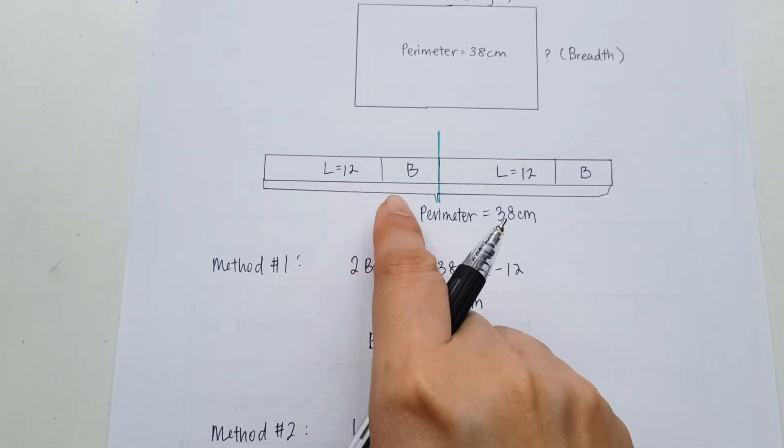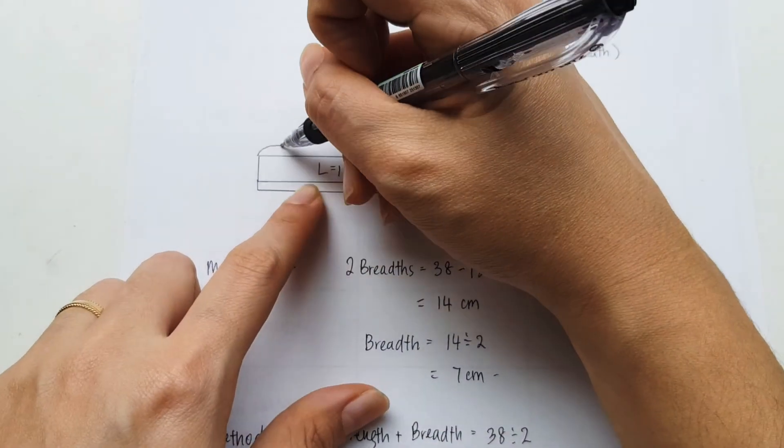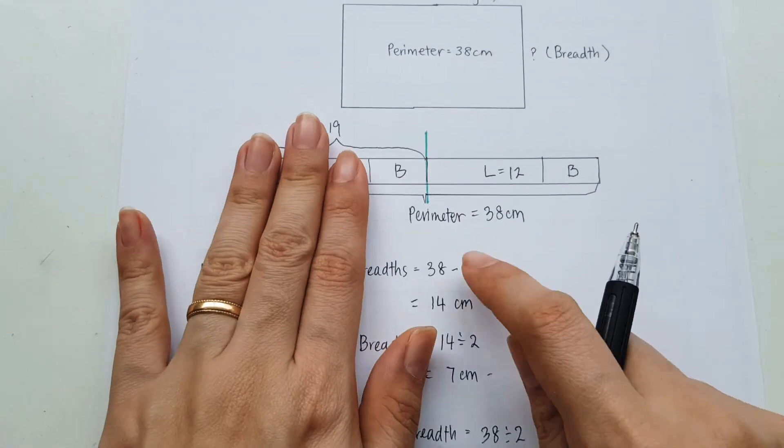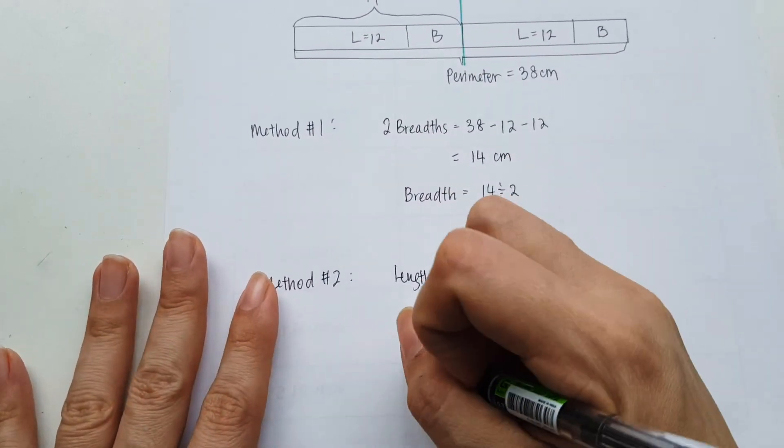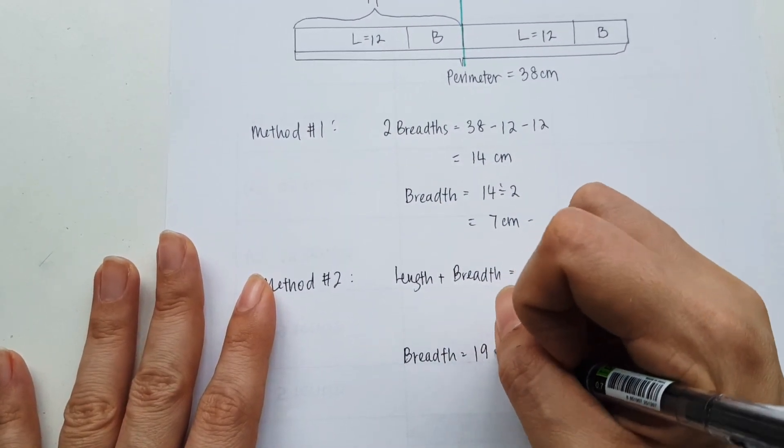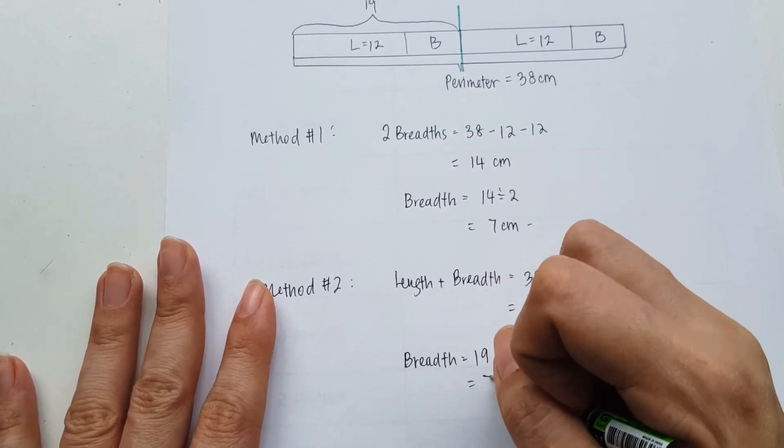Now, if we have 19 on this side, and we know that the length is 12. I can just take 19, take away 12. I get breadth. So breadth equals to 19 minus 12 equals to 7.